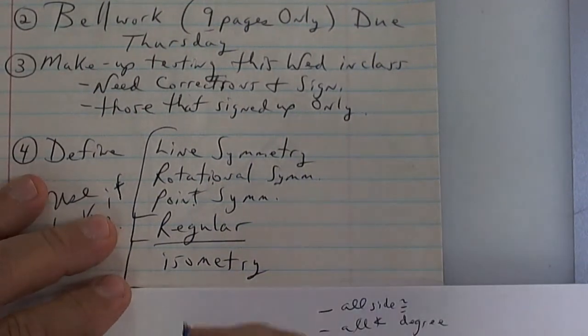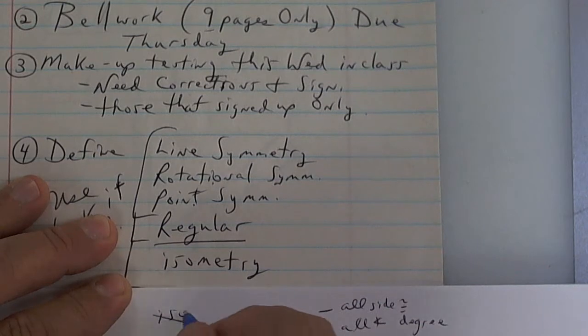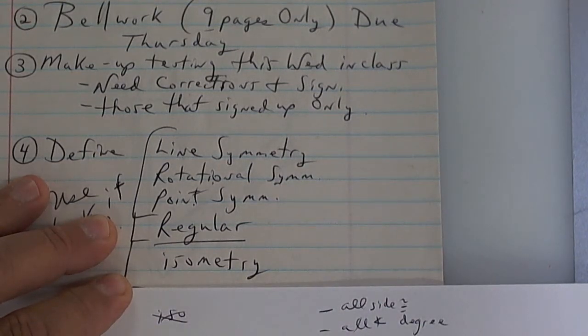Isometry: ISO means the same, so isometry means congruent figures, the same shape in the same size.